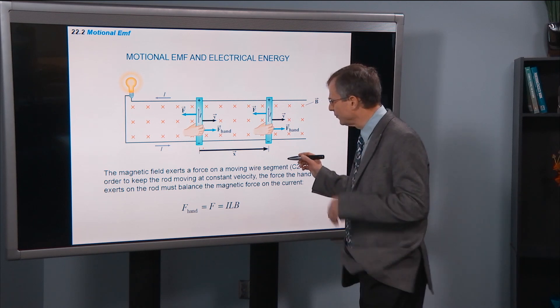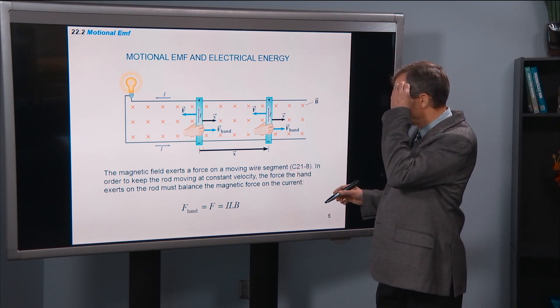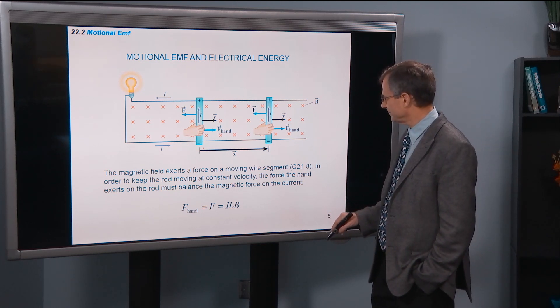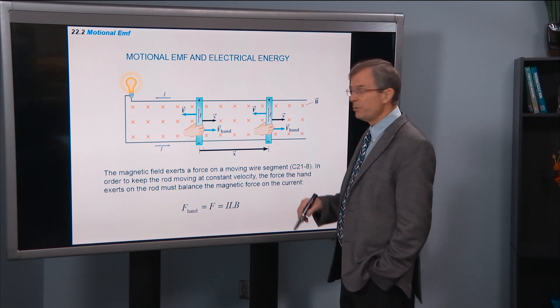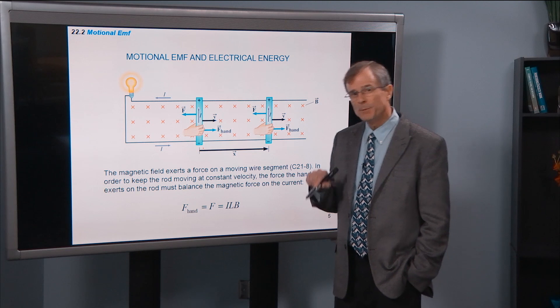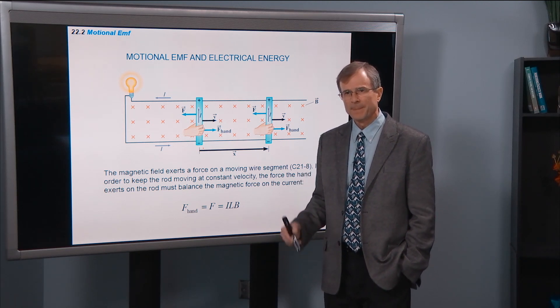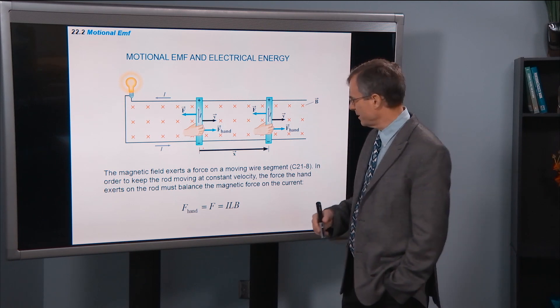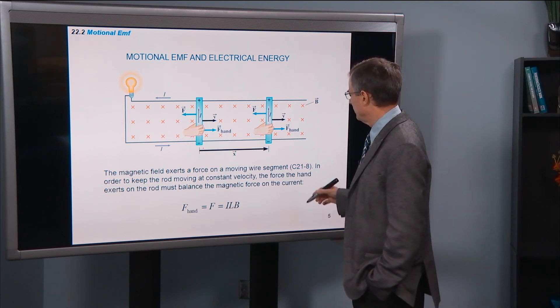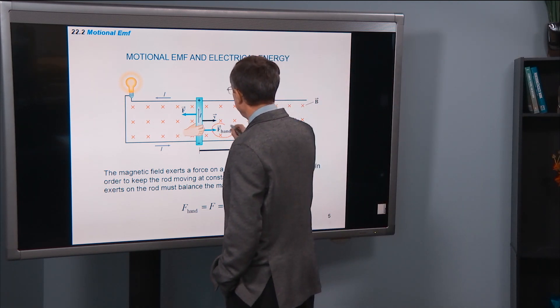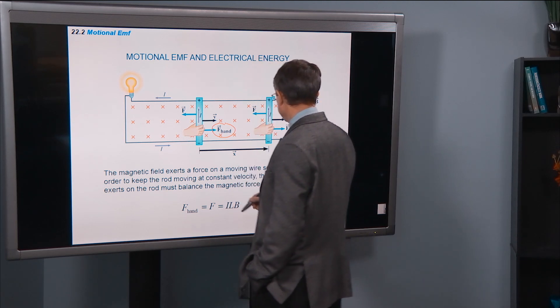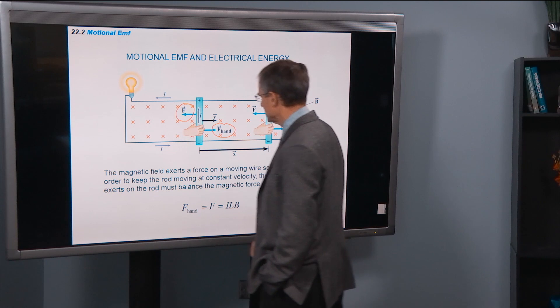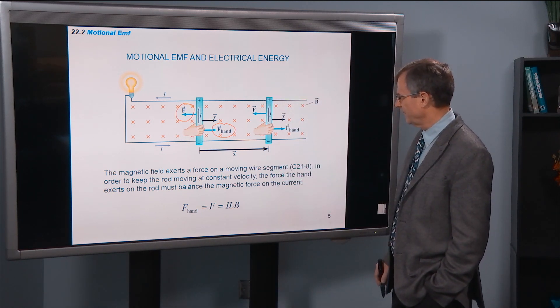The magnetic field exerts a force on a moving wire segment. In order to keep the rod moving at a constant velocity, you have to push on that rod. There's going to be some resistance to motion. And this is the so-called back EMF, and we'll talk a lot about that in this chapter.